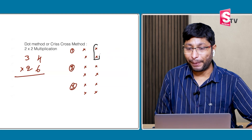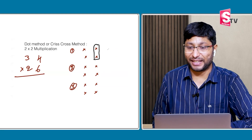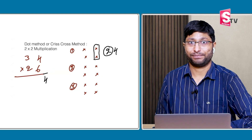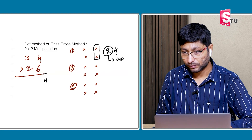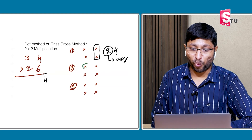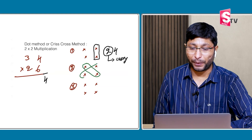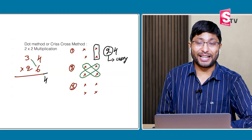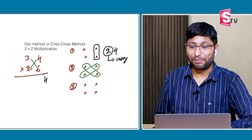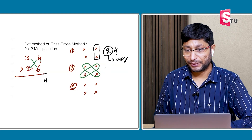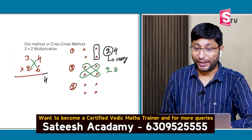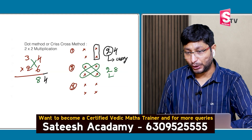Next problem: 34 × 26. Step 1: multiply units place into units place. 4 × 6 = 24. Write down the 4, and 2 will be carry. Step 2: ones place into tens place and tens place into ones place. 6 × 3 = 18, and 4 × 2 = 8. 8 plus 18 = 26, plus 2 carry = 28. Write down the 8, and again 2 will be carry.